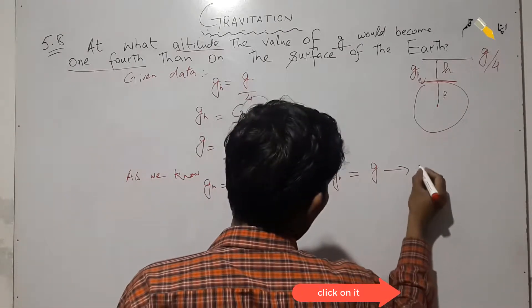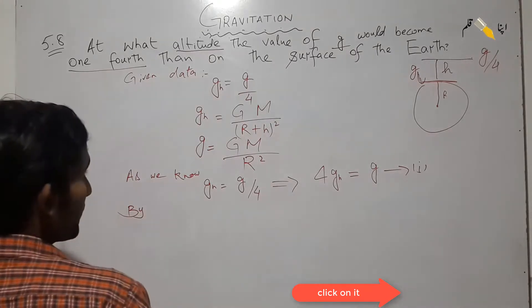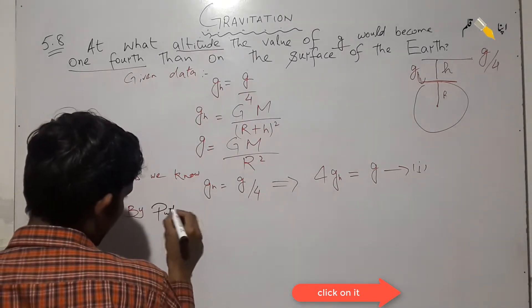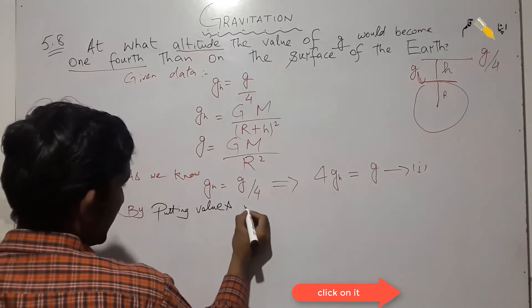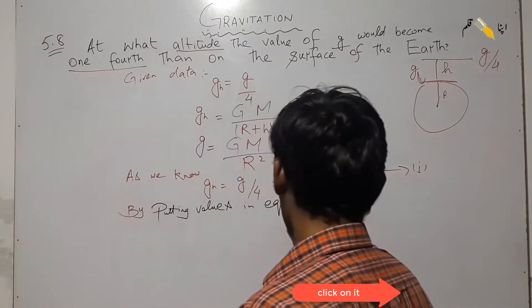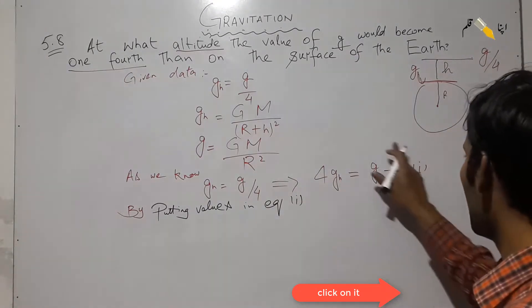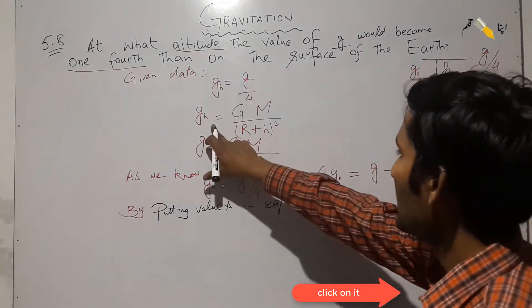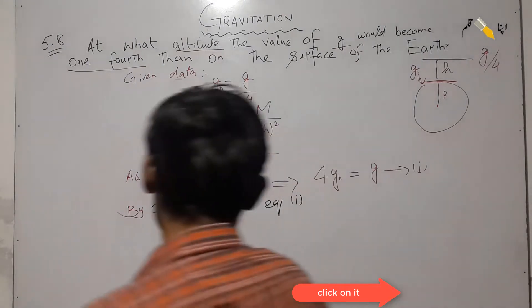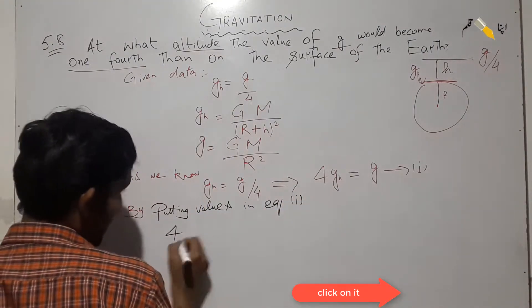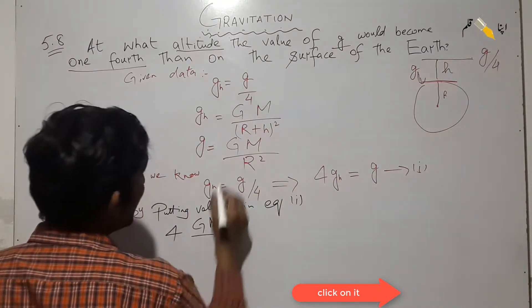By putting in values — substituting g_h = GM/(r+h)² and g = GM/r² — we get: 4 times GM over (r + h) squared equals GM over r squared.